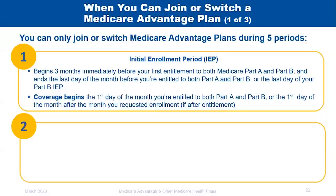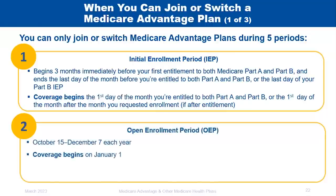The Open Enrollment Period (OEP) is every fall from October 15th through December 7th each year, with coverage beginning January 1st of the following year. This is when most marketing activity occurs, and you can make changes to your plan during this period.